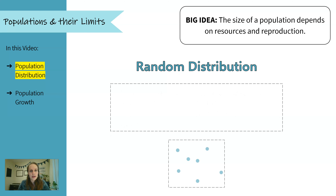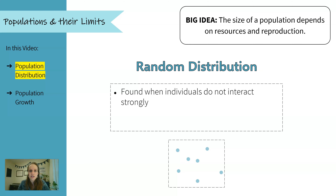First is a random distribution, and we usually find this when the individuals in a population don't interact strongly. Lots of times this is plants, so it could be trees in a forest or dandelions growing in a field. There's no pattern to how they're spread out — it's just random.